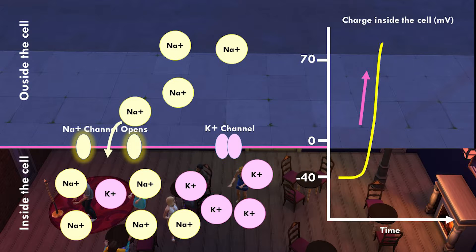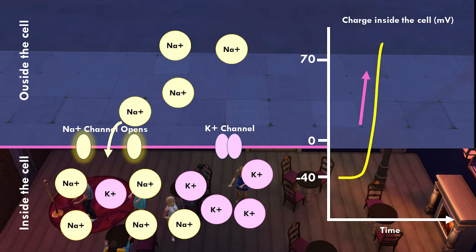Once that sodium starts flooding in, what happens to the charge inside the cell? Notice that as each sodium flows in, it brings its positive charge with it. So the charge inside the cell is getting less negative — it's going up.